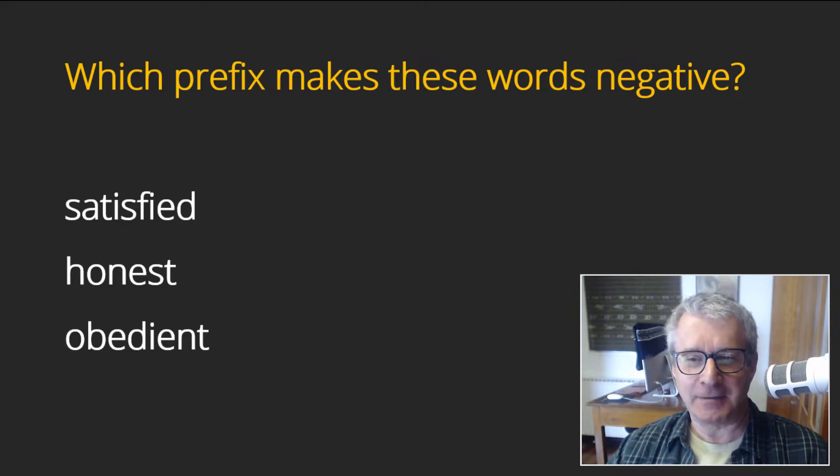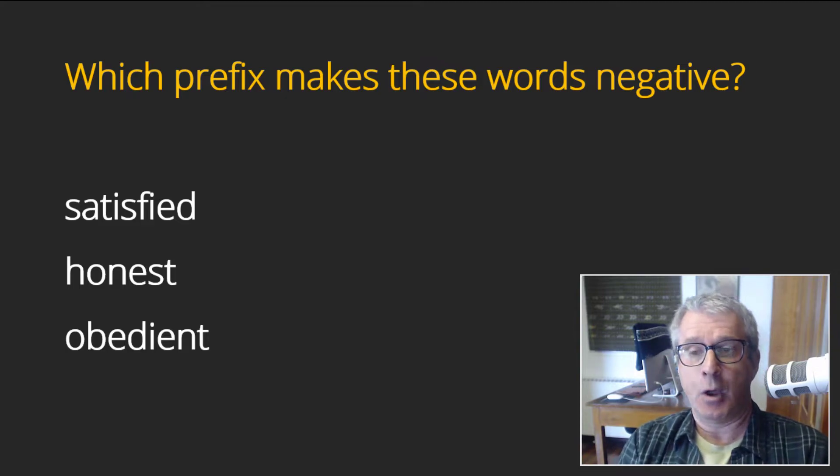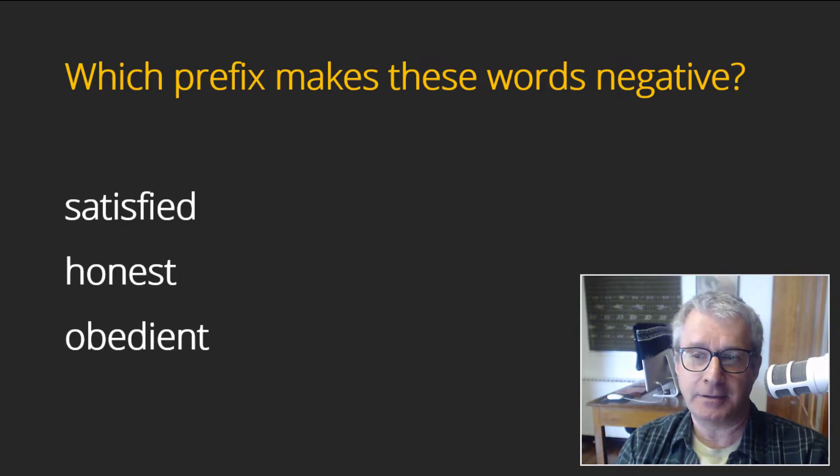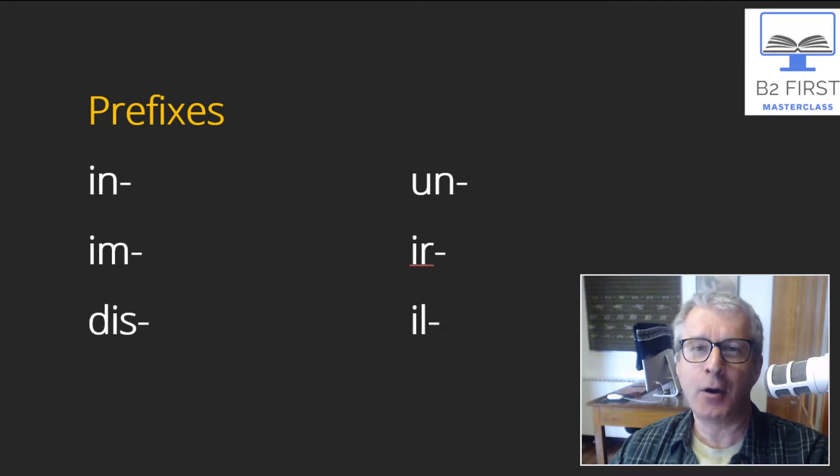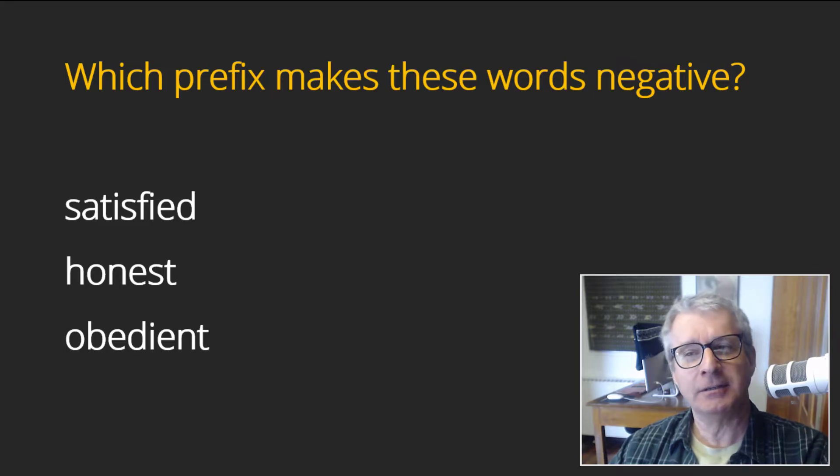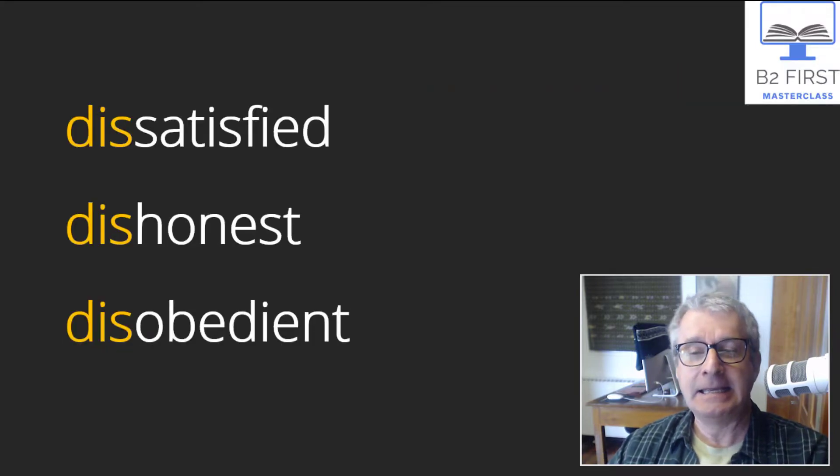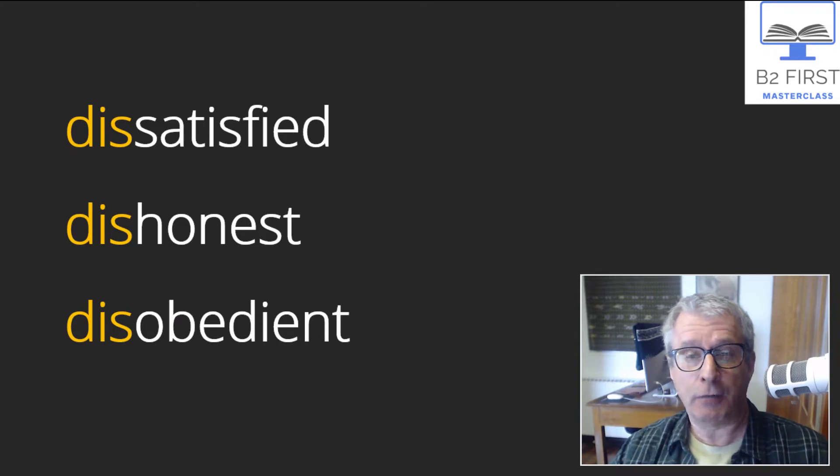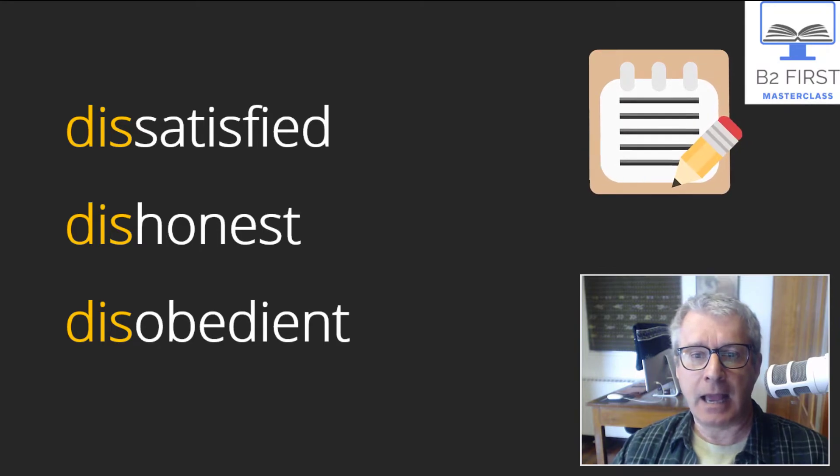Let's look at some examples and see if you know these prefixes. We've got three adjectives here: satisfied, honest, and obedient. Which one prefix changes these words from positive to negative? Do you know? It's one of the prefixes we looked at before. The answer is 'dis-': dissatisfied, dishonest, disobedient. The child is very disobedient—he never does what his parents tell him to do. If you don't know these words, make a note, write them down, and try to learn them.